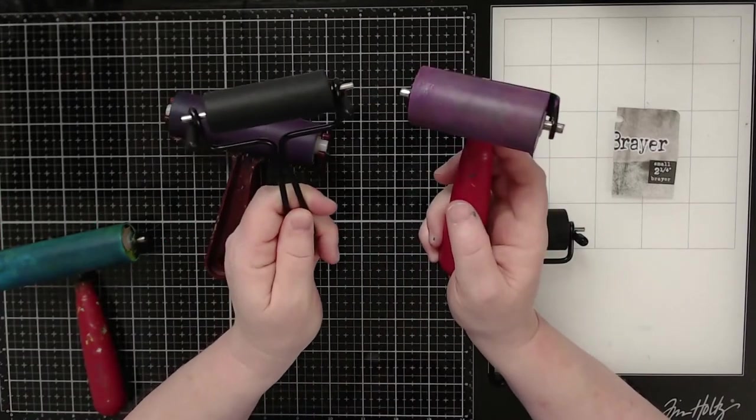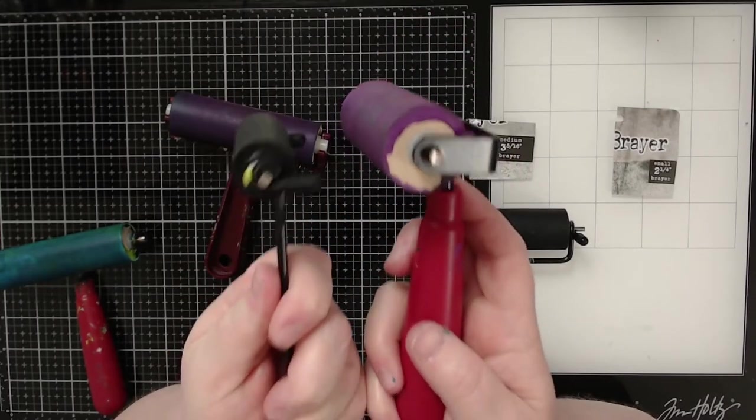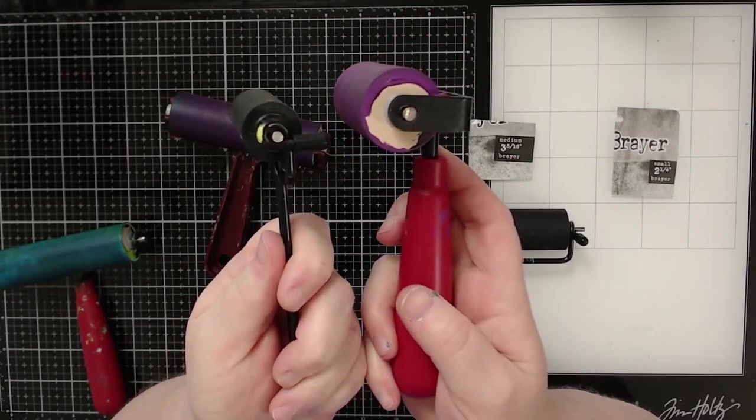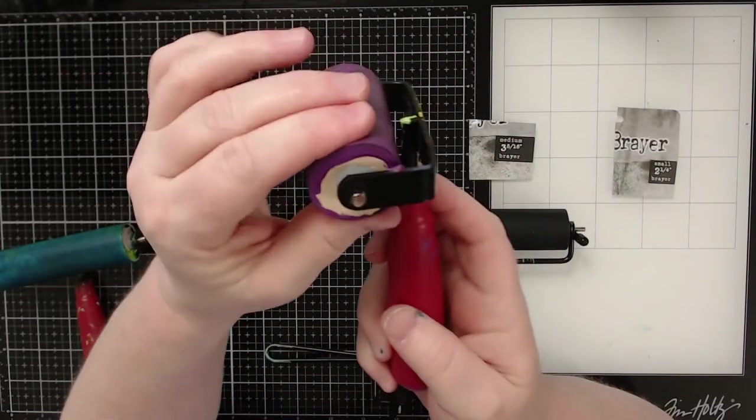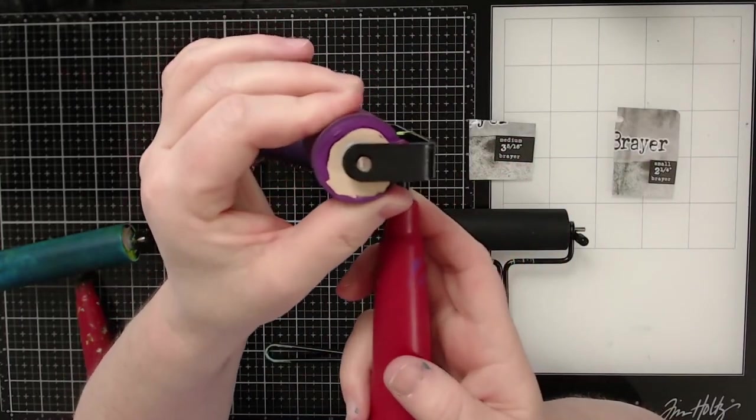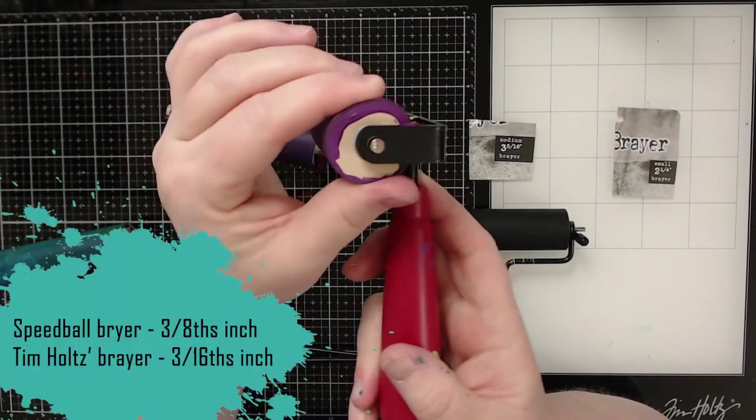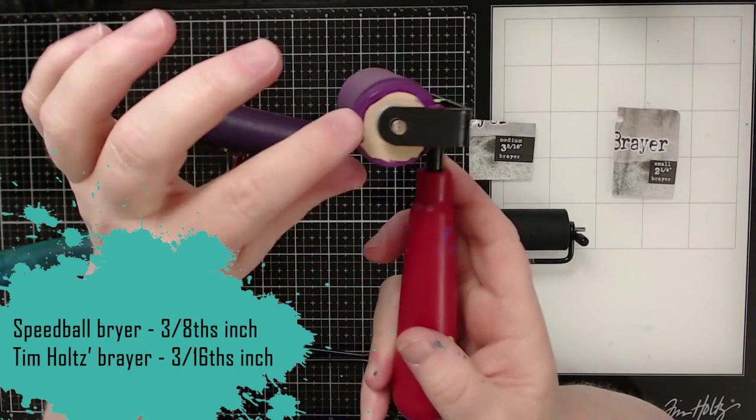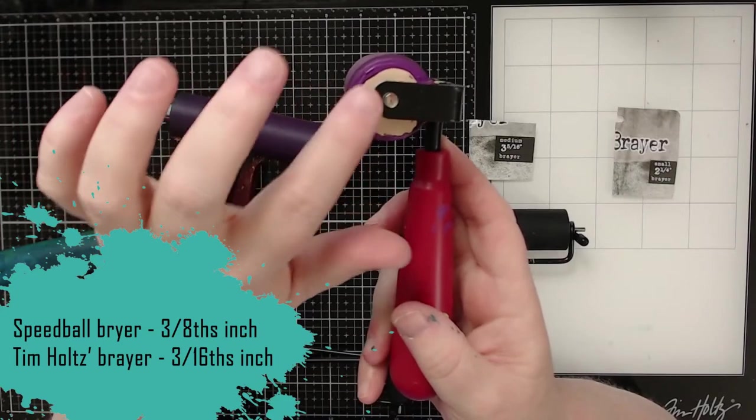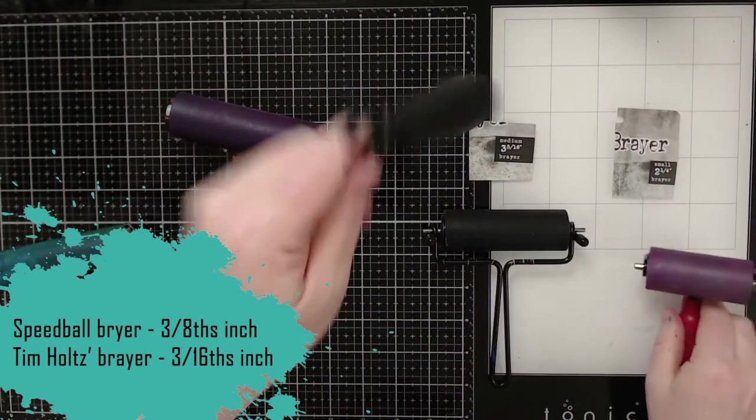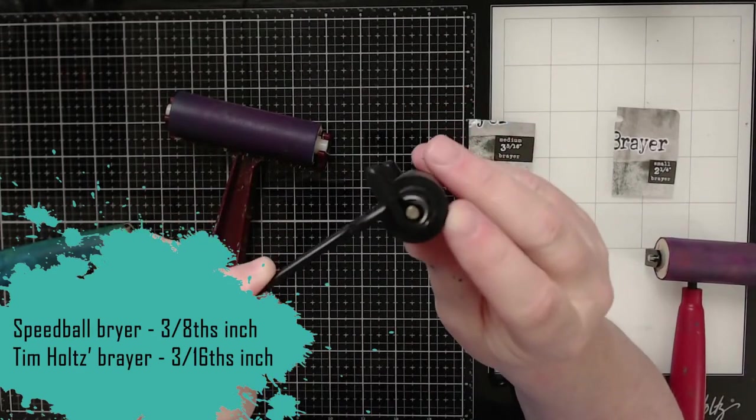But the biggest difference that I saw was the thickness of the brayers. So this brayer, this soft rubber brayer that you can squeeze easily with your fingers is three eighths of an inch thick from the center of the brayer to the outer edge, whereas this brayer is three sixteenths of an inch.